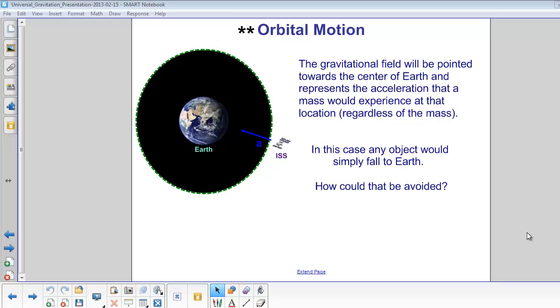The gravitational field will be pointed towards the center of the Earth, and that gravitational field is the acceleration that a mass would experience at that location. In this case, any object would just fall towards the center of the Earth. How could that be avoided?